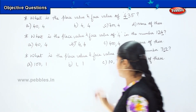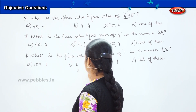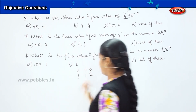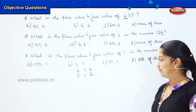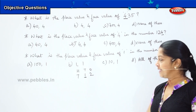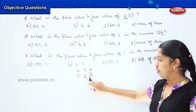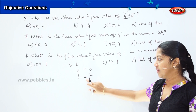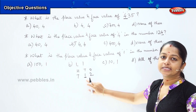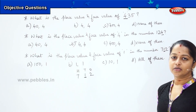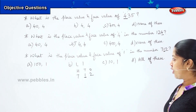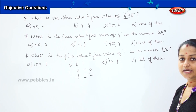How will you solve it? First, write H, T, O and write the numbers in their respective columns. What is the number which we have to find? It is number 1. And where is it seated? It is seated under the tens column. So what is the place value of 1? It is 10. And what is the face value? It will remain the same, which is 1. So my answer should be 10 and 1. That is option C.